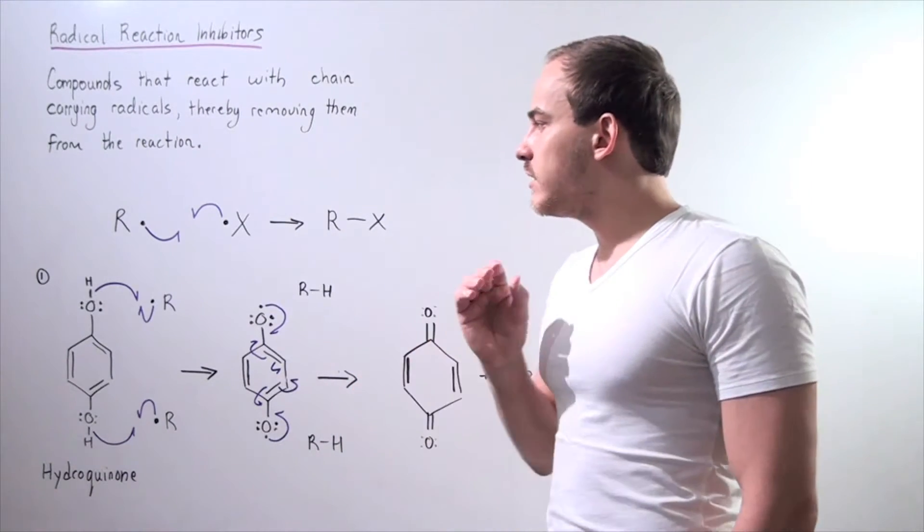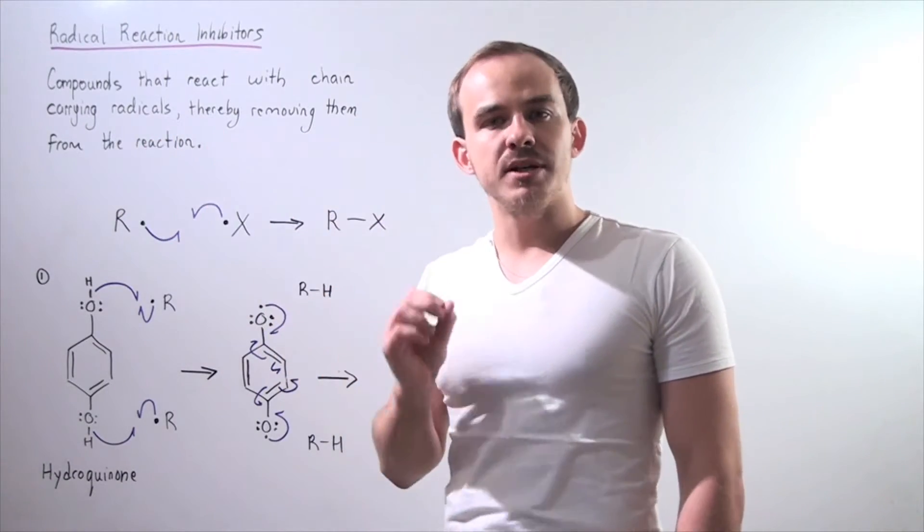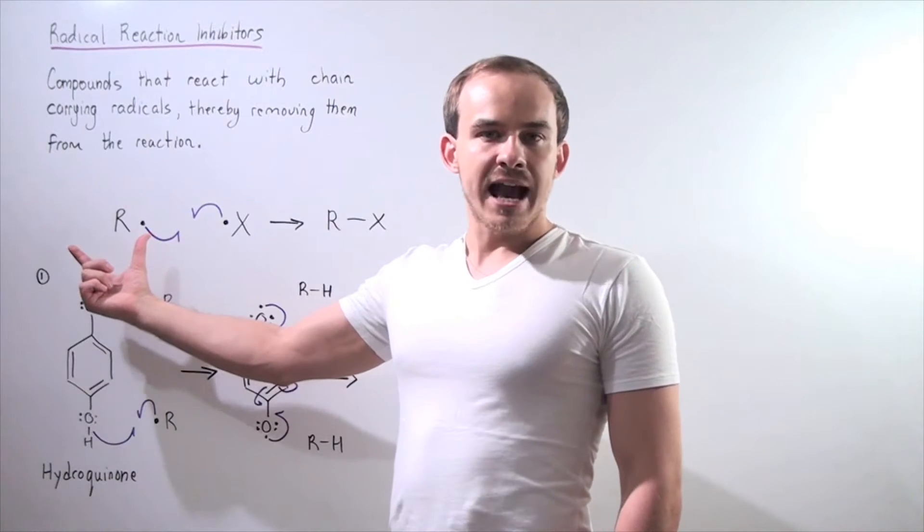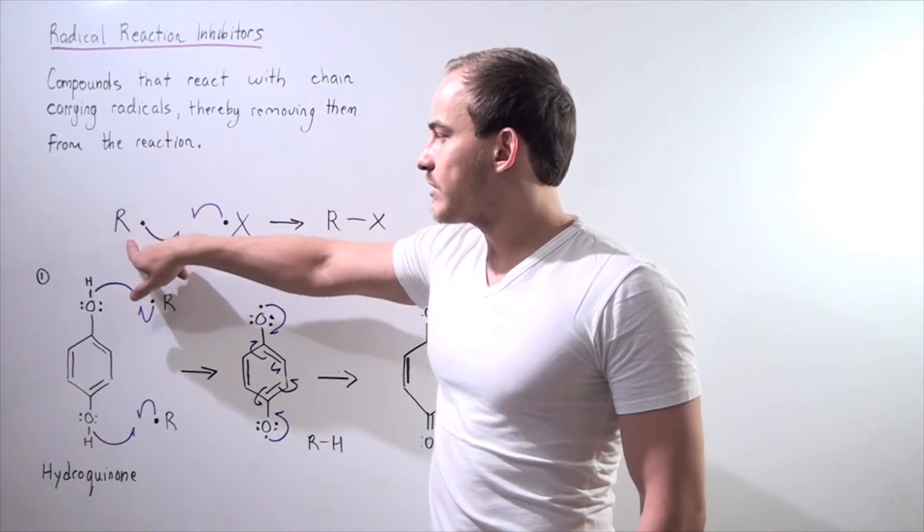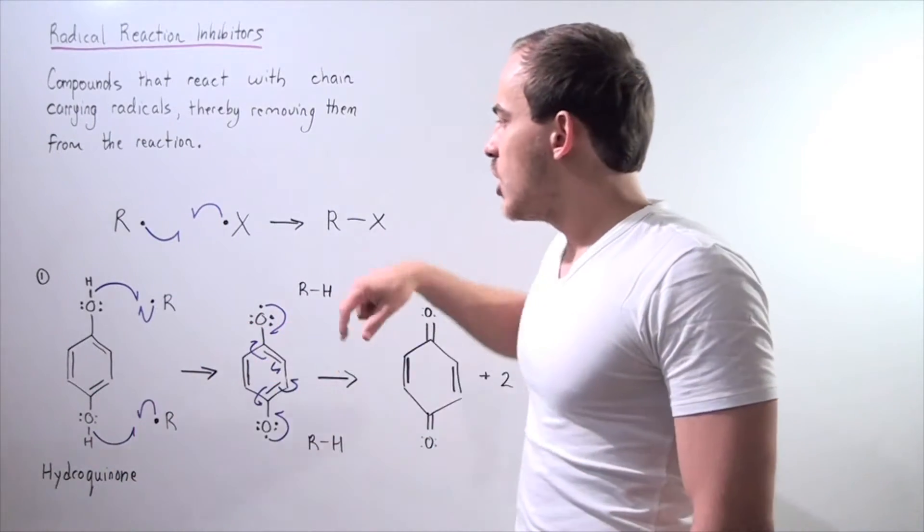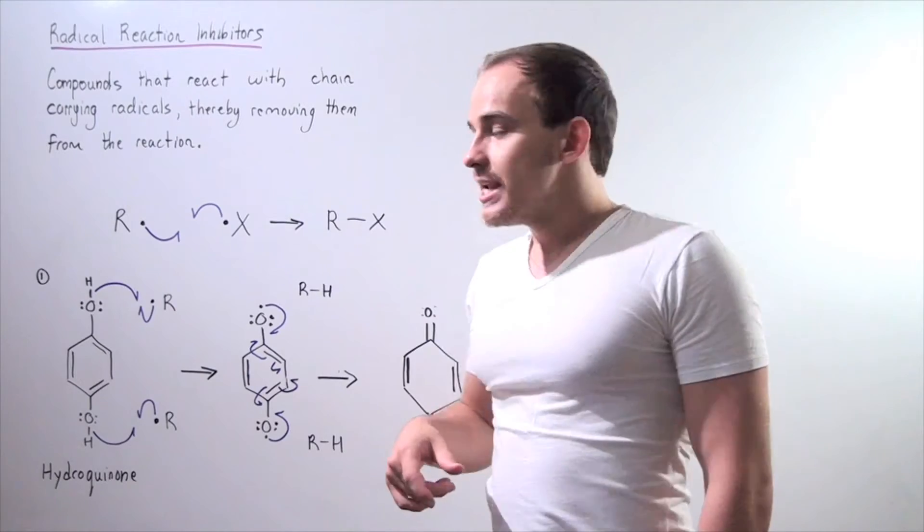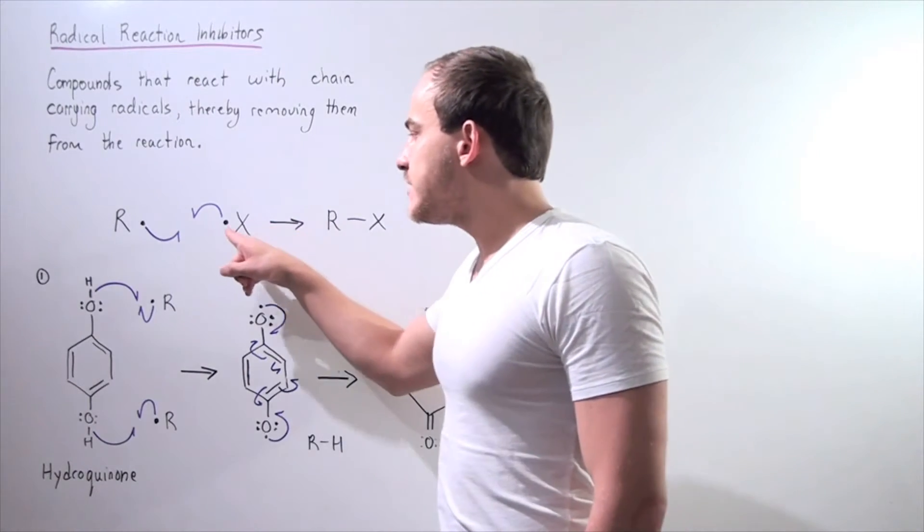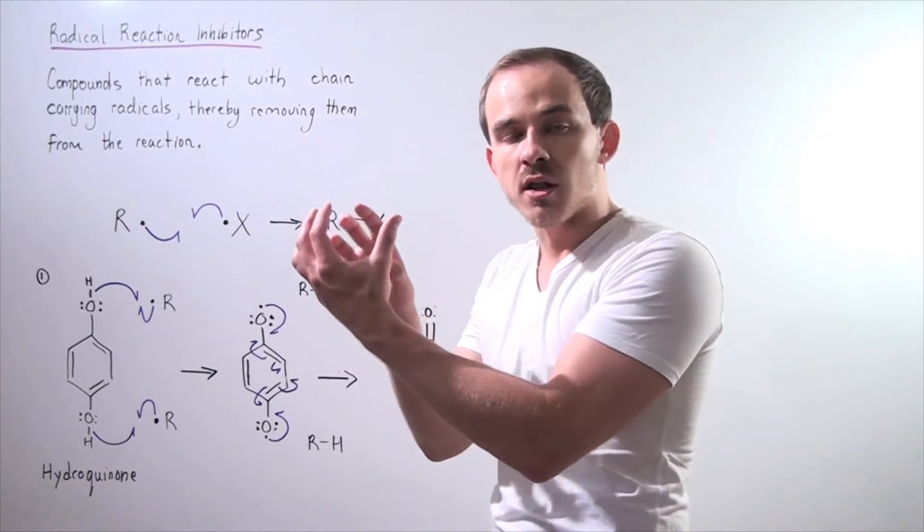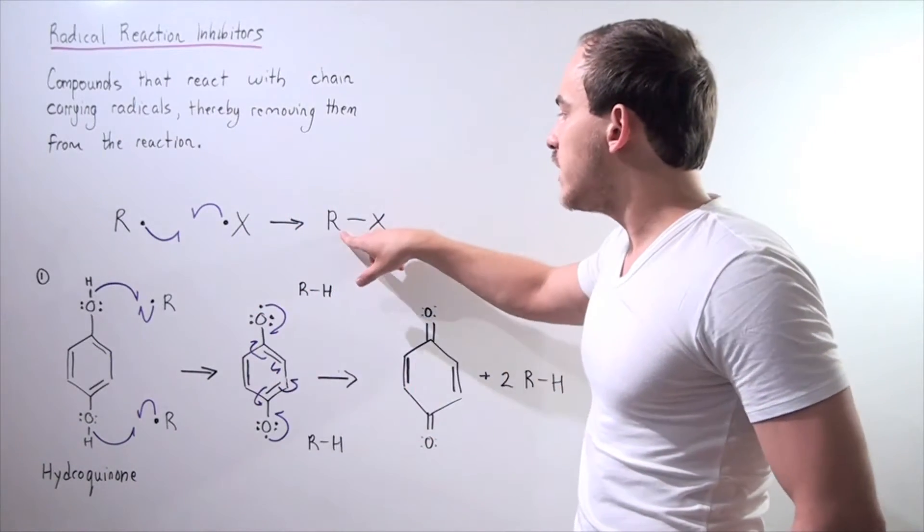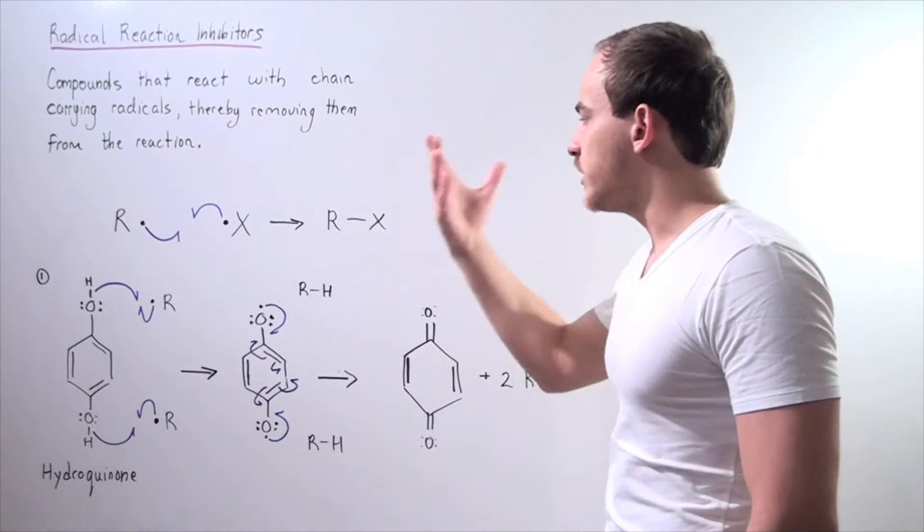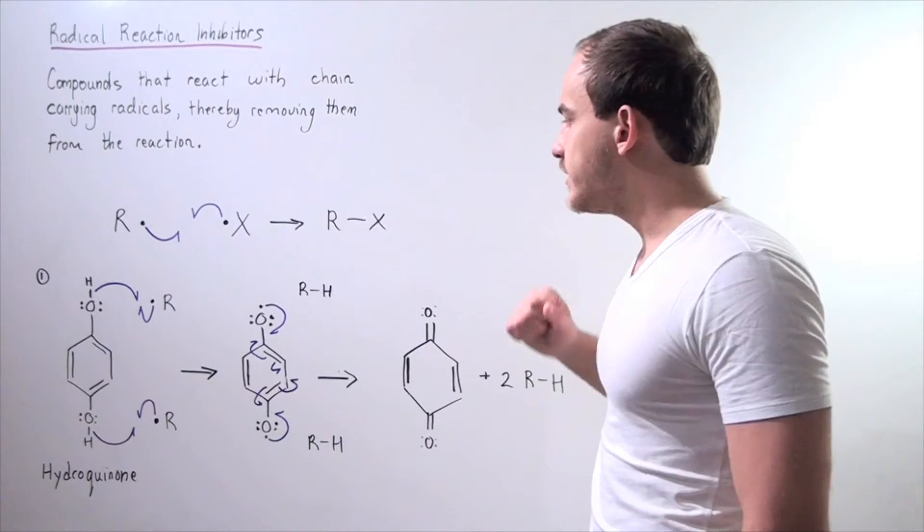So let's begin by looking at the general case of our inhibition reaction. Let's begin with some chain-carrying radicals shown with the R and a single electron attached to the R. And let's add an inhibitor shown with an X with a single electron. Now what happens is these two electrons on these compounds interact, they approach one another forming a covalent bond, a sigma bond, in an exothermic fashion. So energy is released and we form the following sigma bond.